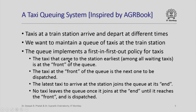So here is a simple problem. It is about a taxi queuing system and it is inspired by a discussion in the AGR book. We suppose that we have a train station where taxis arrive and depart at different times and we want to maintain a queue of taxis. We require this queue to implement a first-in-first-out policy, meaning the taxi that arrived earliest should be at the front and dispatched first when a passenger calls. The latest taxi to arrive must join at the end and no taxi may leave until it reaches the front and is dispatched.